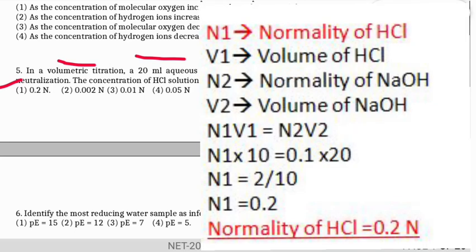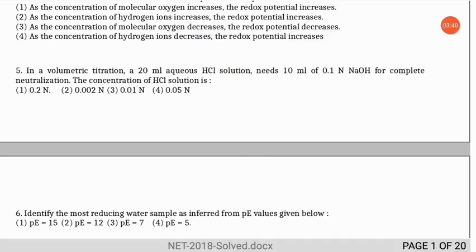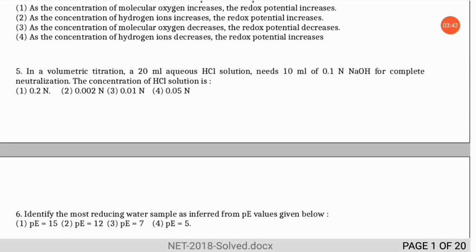We solve this with the formula N1V1 = N2V2. N1 is the normality of HCl (unknown), V1 is 20 ml, N2 is 0.1 (normality of NaOH), and V2 is 10 ml. Substituting values: N1 × 20 = 0.1 × 10, so N1 = 0.05. The normality of HCl is 0.05 N — option 1 is the correct answer.